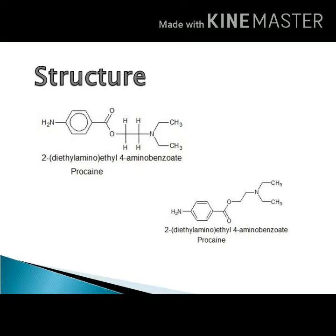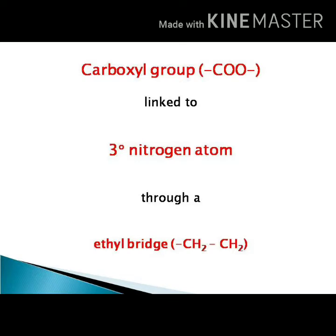The acid part of procaine is 4-aminobenzoic acid, so the ester is 4-aminobenzoate. The alcohol part is diethylaminoethanol. The number one carbon atom is attached to the carboxylic acid, and the second carbon atom is where the amino group is attached, with two hydrogen atoms replaced by ethyl groups. So the IUPAC name of procaine is 2-diethylaminoethyl 4-aminobenzoate.